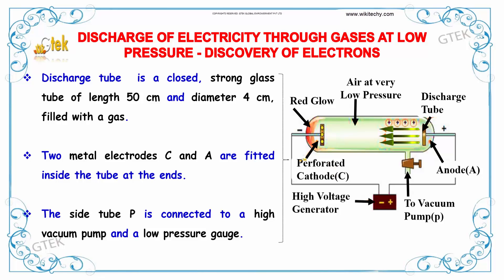Here we have the perforated cathode. To this tube we are able to apply a high voltage. Here is the vacuum pump and the anode. The cathode and anode are the two metal electrodes fitted inside the tube. The side tube P is connected to a high vacuum pump and a low pressure gauge.